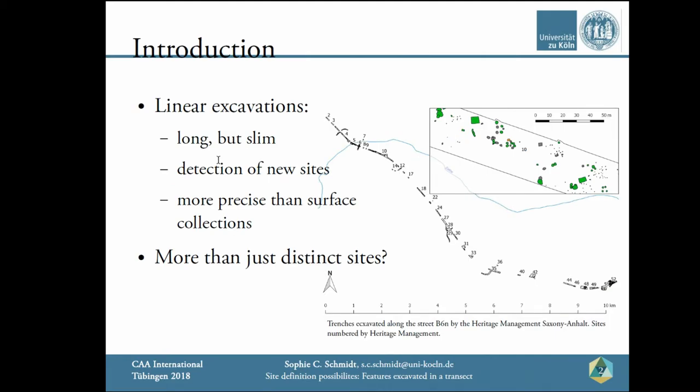Linear excavation projects, such as for street or pipeline construction, offer a glimpse into the archaeological record. They have been praised for turning up many new sites not identifiable by surface collection, and are thus an important corrective to preconceived notions about settlement developments, especially in rural areas. My take on the transect analysis was inspired by the idea that a long excavation may yield more information if seen as a continuous trench, rather than as a line of distinct sites — essentially similar to the non- or off-site archaeology developed by Foley, Thomas, and others in the 70s and 80s.